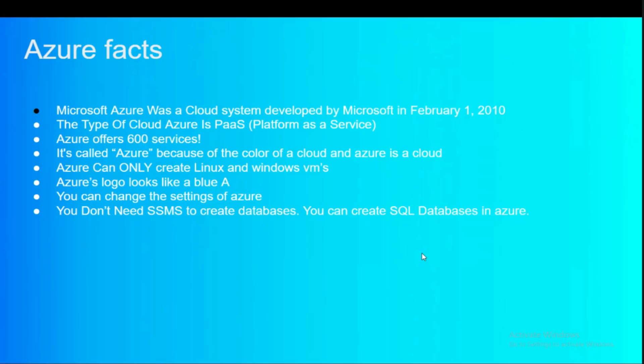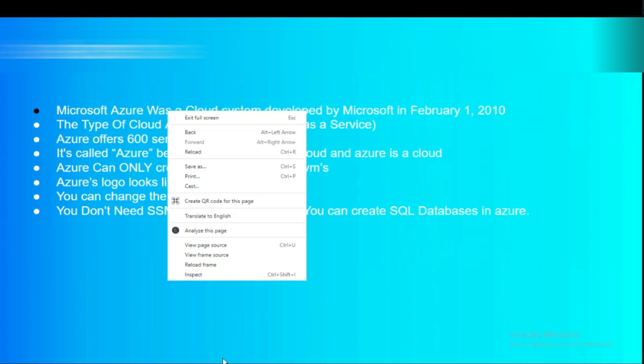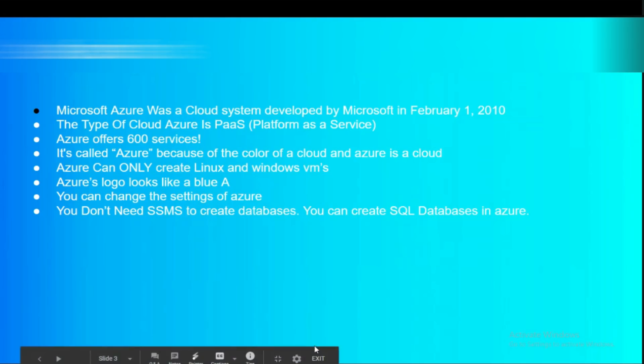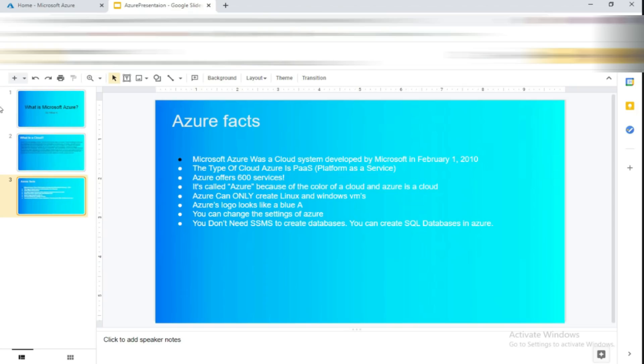It's called Azure because of the color of a cloud. Azure can create Windows VMs and Linux VMs. Azure's logo looks like a blue 'A'. You don't need to change settings manually or use SSMS to create databases — you can create SQL databases directly in Azure.